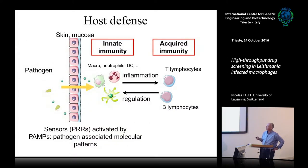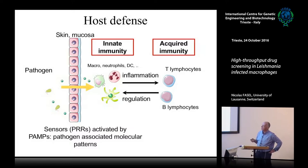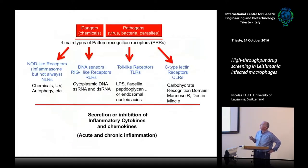So you have some kind of instructions. The pathogen goes through the skin or mucosa, then it can be sensed by specific pattern recognition receptors. You can have inflammation, instruction of T and B cells, and then regulation of the immune response. So you can divide it between innate and acquired immunity.